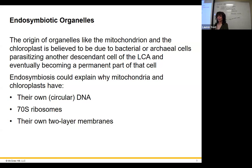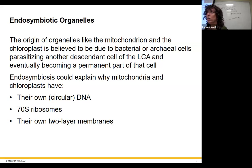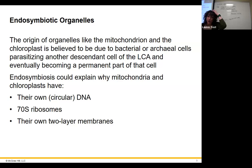Mitochondria as well as chloroplasts have their own genome. They divide separately from your cells — they divide by binary fission, like bacteria, not like our cells do with mitosis. Their genome is one circular DNA, just like bacteria, and their ribosomes are the exact same size as bacteria. That's really compelling evidence to suggest organisms can become so dependent on one another that they become a part of one another.